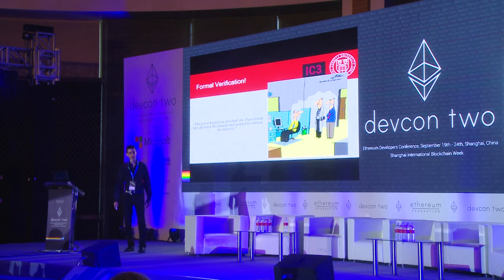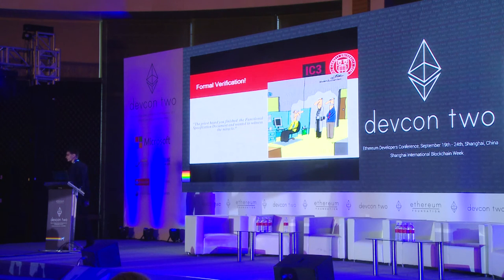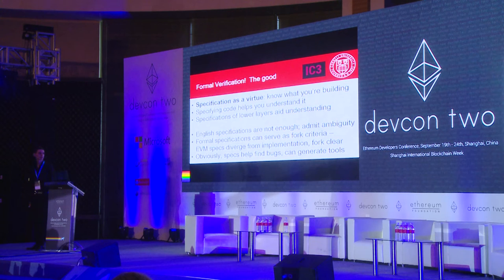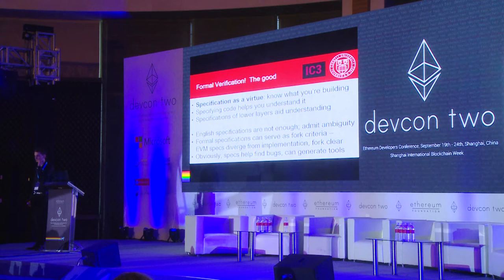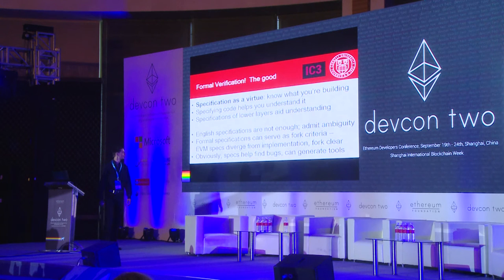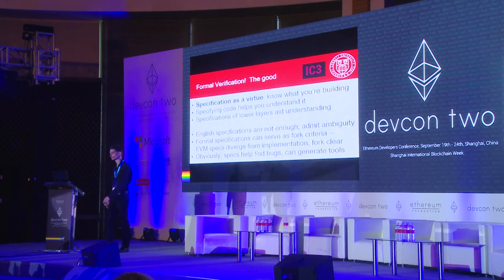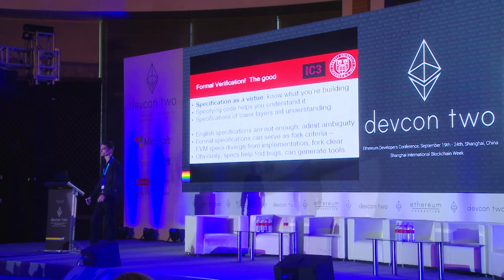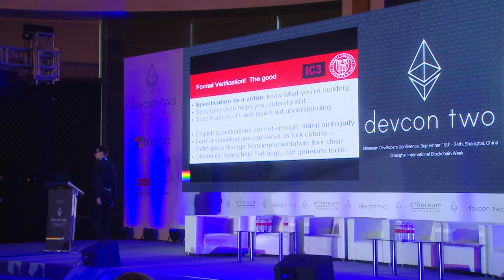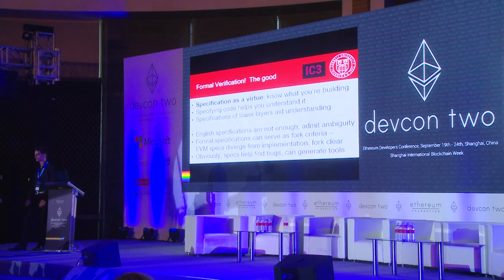Formal verification is probably the hottest topic of these three in the community right now. What do we like about it? First of all, specification is a great virtue — by rigorously and mathematically specifying what you're building, it helps you understand the systems you're making on a deeper level. Also, specifying the lower levels rigorously — things like the EVM and the languages we're using — helps authors of higher-level systems know exactly what guarantees they can expect.